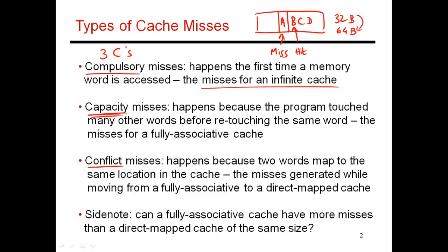The next kind of miss is called a capacity miss, best explained with an example. Let's say I access block A, then start accessing blocks B, C, D, and so on, and then much later in time I again touch block A. The question is whether this next access to A is going to be a cache hit or a cache miss, and it depends on how many different blocks I touch between those consecutive accesses to A.